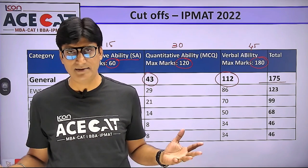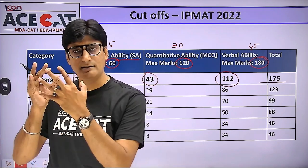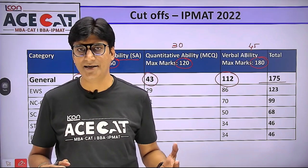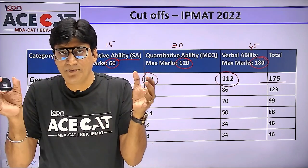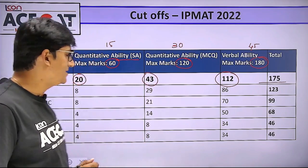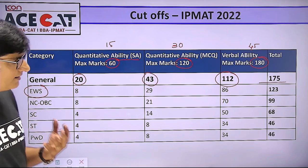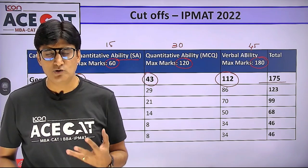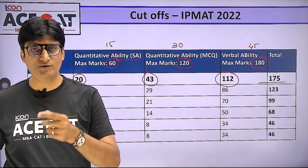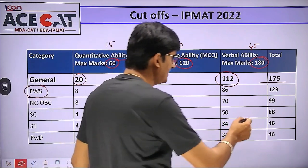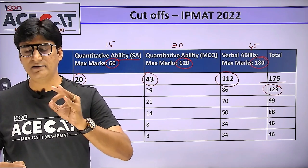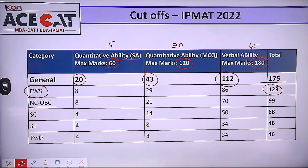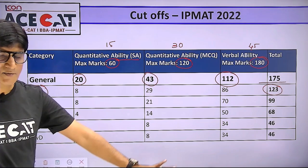Don't presume that the same cutoff will be there this year — it can be less or the same; it depends on the paper level. Students, for EWS category — economically weaker section with 10% reservation — the cutoff was 123. For OBC the cutoff was 99, SC was 68, ST was 46, and PWD was also 46.